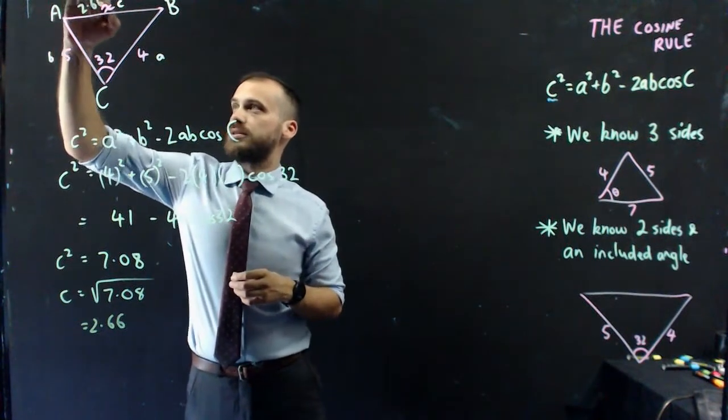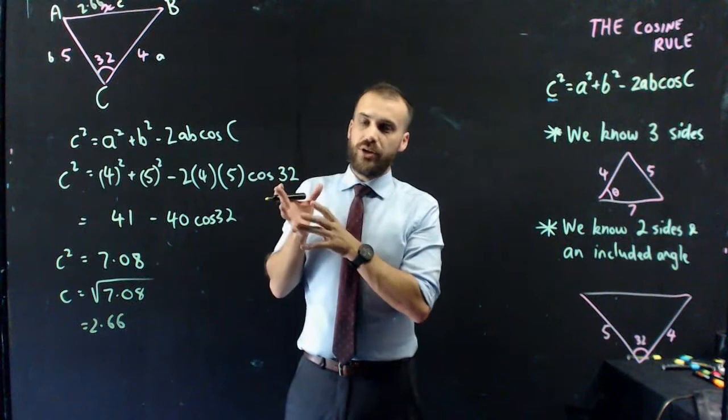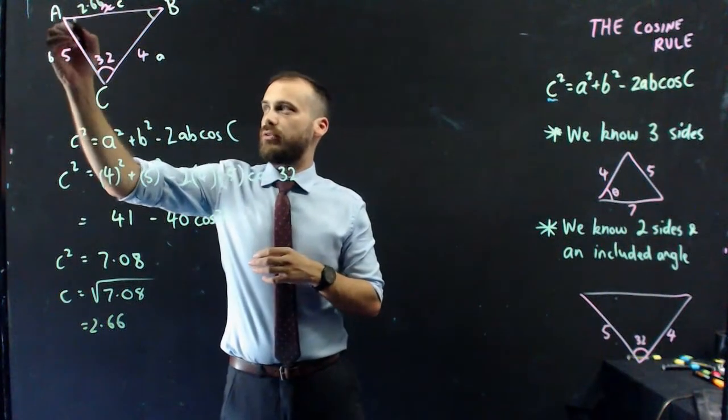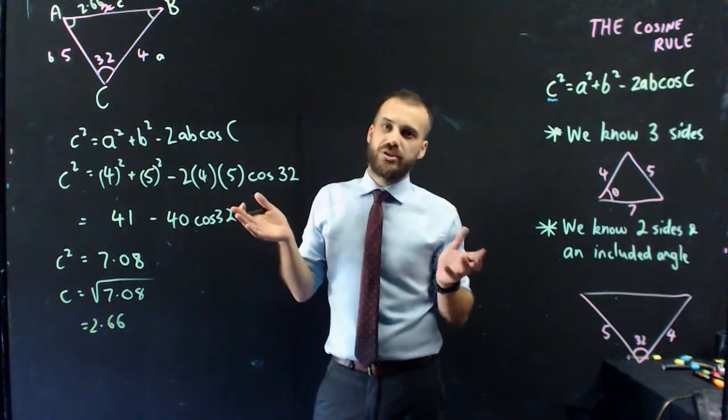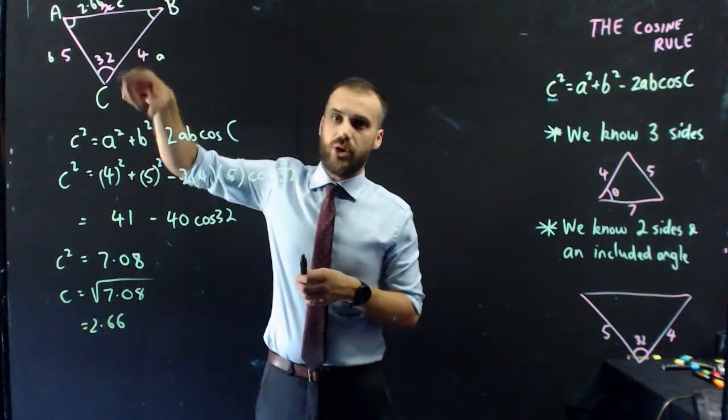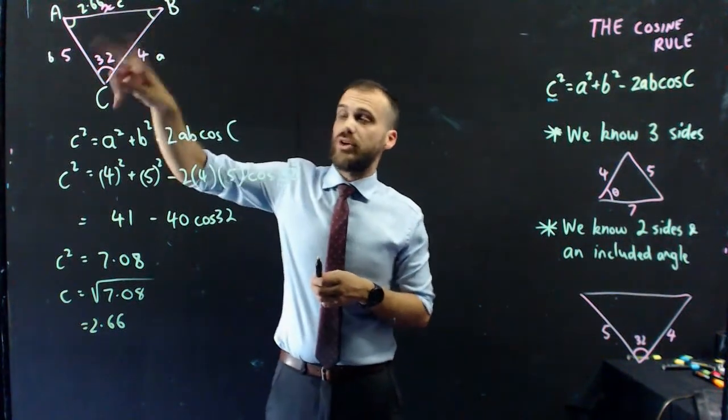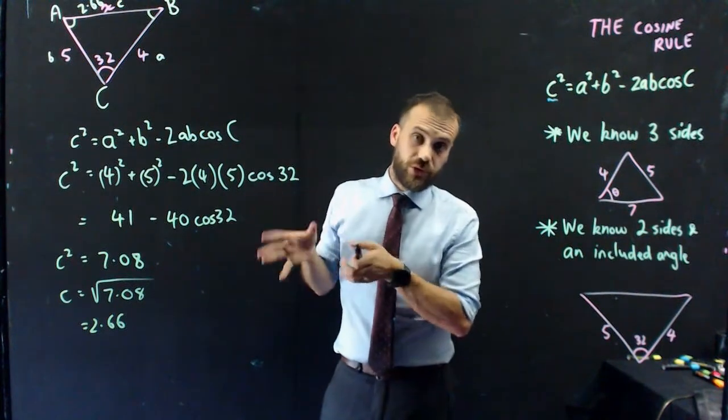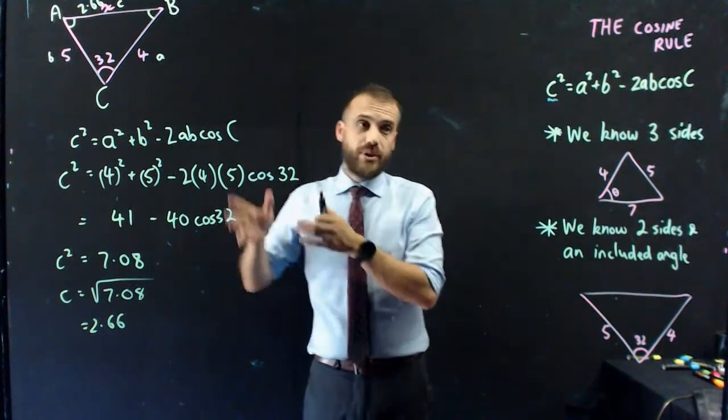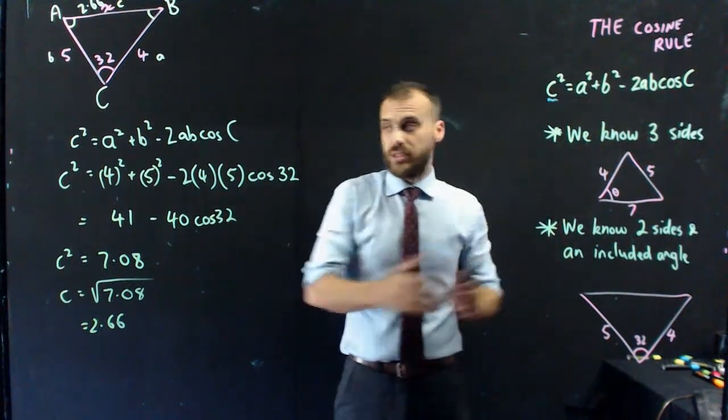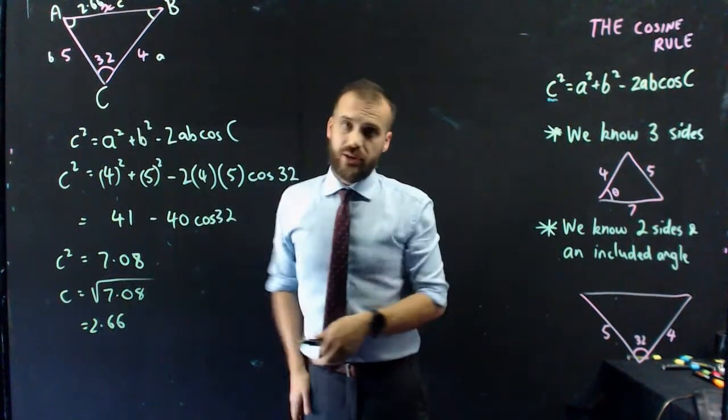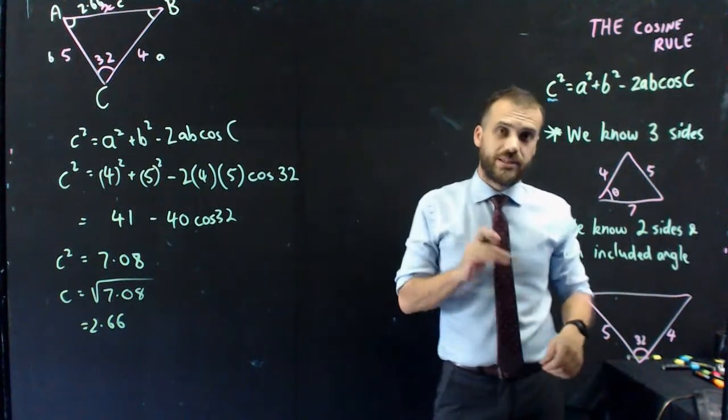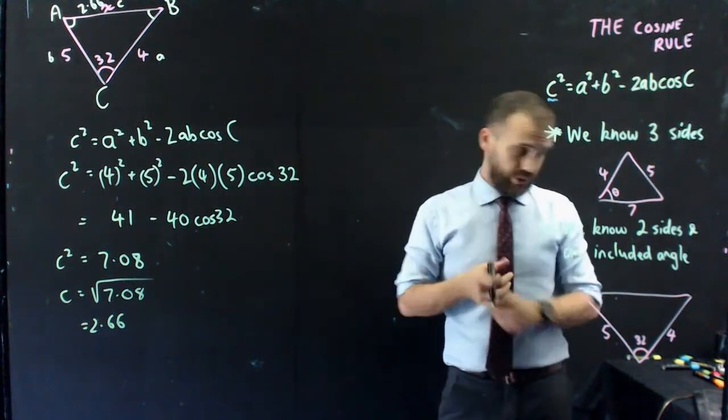That's the ball game. That is 2.66. Now, now that I know that, if I want to find that angle, or if I want to find that angle, I can just use my sine rule now, because I know a sine and I know an angle opposite each other. So now I can just use sine rules everywhere. That is the one type of cosine rule. It's probably the easier one, because it's literally just shove all the numbers in, put it into your calculator, answer.